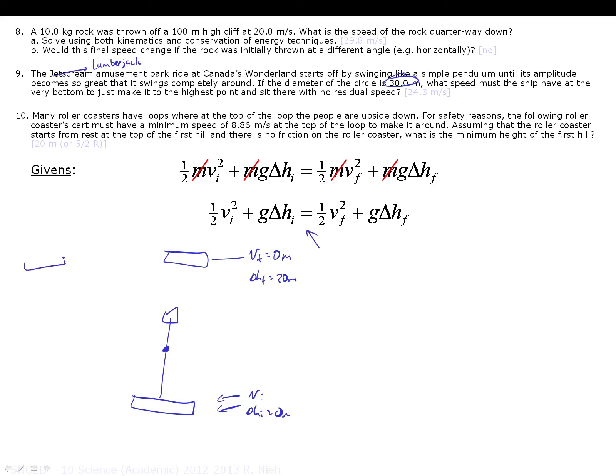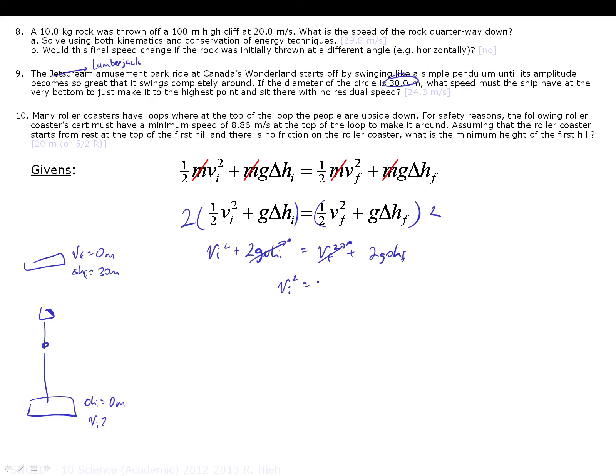If this ride has a height of 30 meters, so your delta HF equals 30 meters, down here your delta HI equals zero meters, then you can search for what your VI needs to be. Once again, we're going to be using this equation from up here. In your givens, you have a VF equal to zero meters, you have a delta HF of 30 meters, you have a delta HI of zero meters, and you're trying to look for what is the minimum speed required so that it can make it to the top and pause for a brief moment.